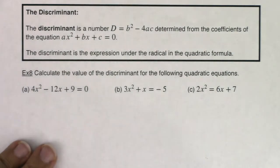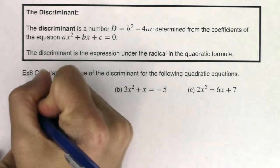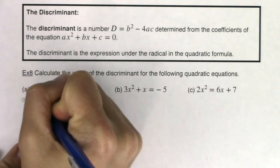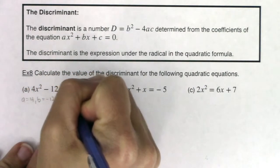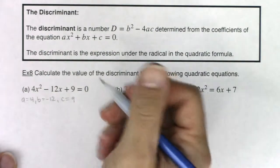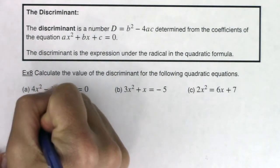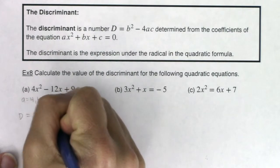So I have that in part a. So I can see right here a equals 4, b equals negative 12, c equals 9. So then if I wanted to calculate the discriminant, it would be b squared minus 4ac.